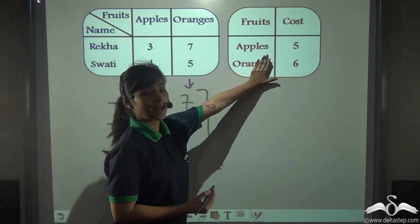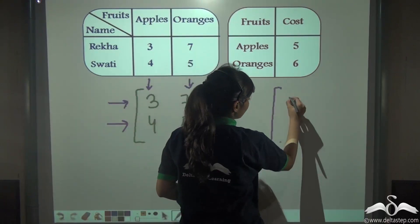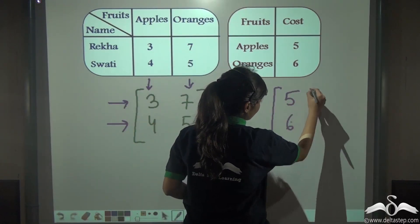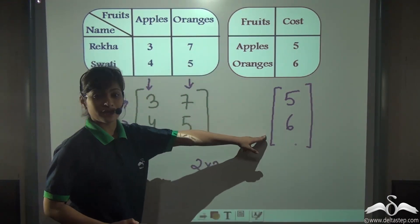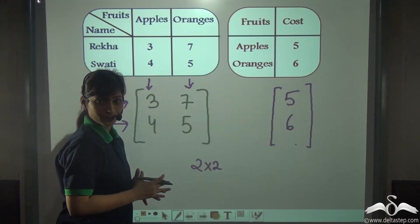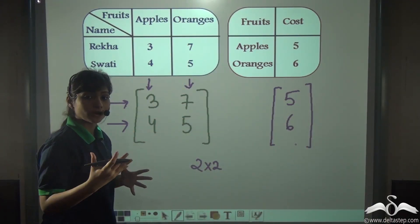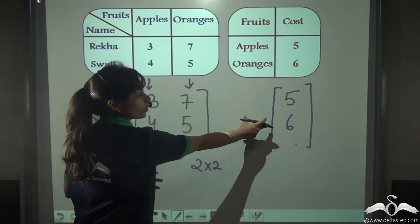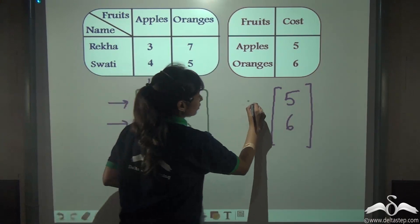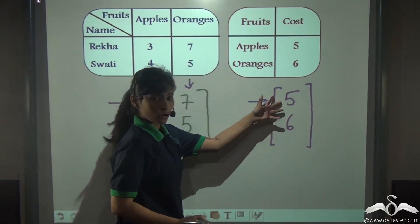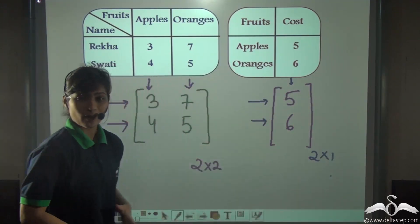Even the price data can be represented in a matrix form. The numbers and entries are different, and the order is also different. What is the order of this matrix? It has two rows and one column, so the order of this matrix is two by one.